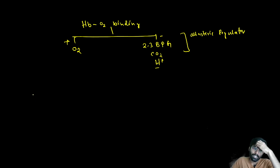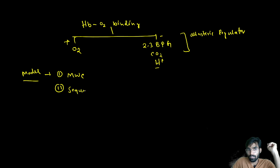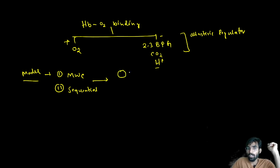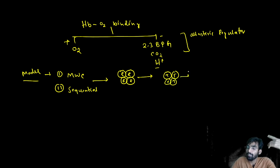Two models have been proposed for allosteric regulation. The MWC model proposes that all four subunits are in the same conformational state at any given time — all relaxed simultaneously, or all tense simultaneously. If oxygen comes, one binding event enhances the relaxation of all subunits together.